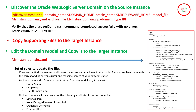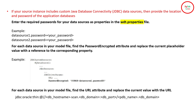There are additional rules to follow based on your domain configurations — for example, if you have data sources or SSL configured. If your source instance includes custom JDBC data sources, you must provide the location and password of the application database. Since the tool does not capture sensitive information during discovery, it creates placeholder sections in the YAML file where you must specify new passwords.